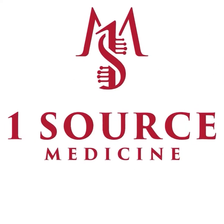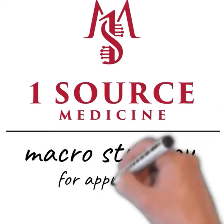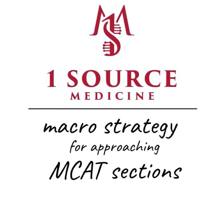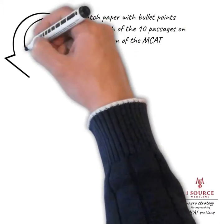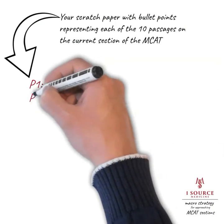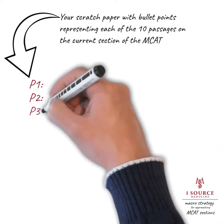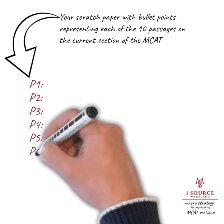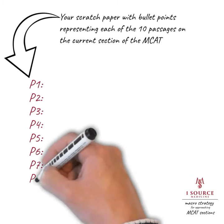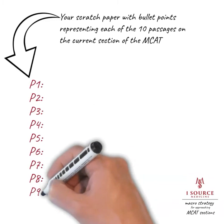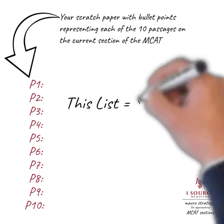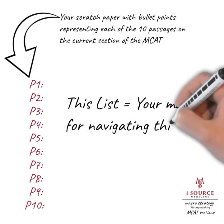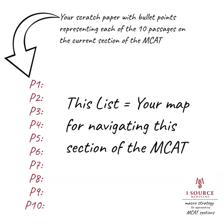Today we're going to discuss the OneSource Medicine macro strategy for approaching MCAT sections. Before starting a given section on the MCAT, you want to first make a bulleted list with space for each individual passage you're going to encounter. While the CARS section includes 9 passages, each of the 3 MCAT science sections has 10, so we'll just stick with 10 for our example. This list is going to serve as your roadmap for moving through the upcoming section of the MCAT.